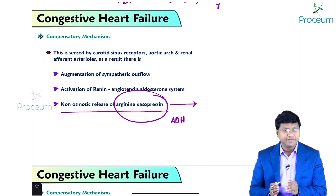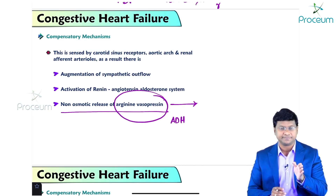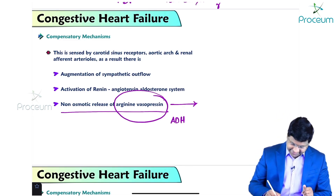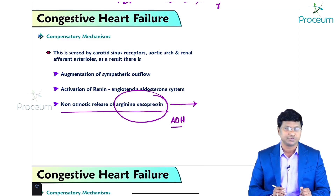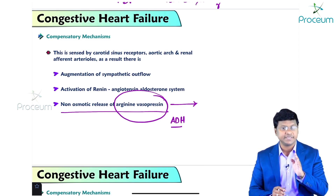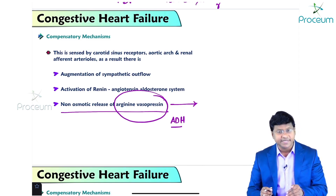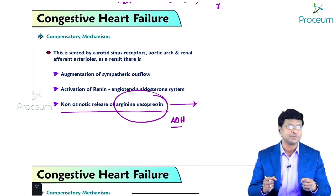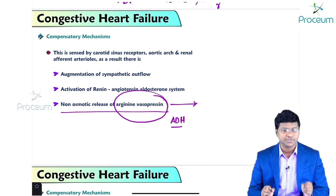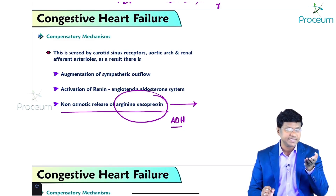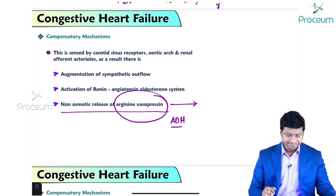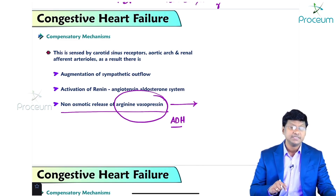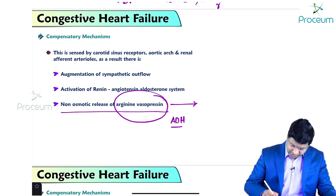Normally, whenever there is an increase in osmolality, there is release of antidiuretic hormone or arginine vasopressin, which causes reabsorption of water from the distal tubules to return osmolality to normal. But in congestive heart failure, there is non-osmotic release of arginine vasopressin or antidiuretic hormone, which causes water reabsorption from the distal tubules.